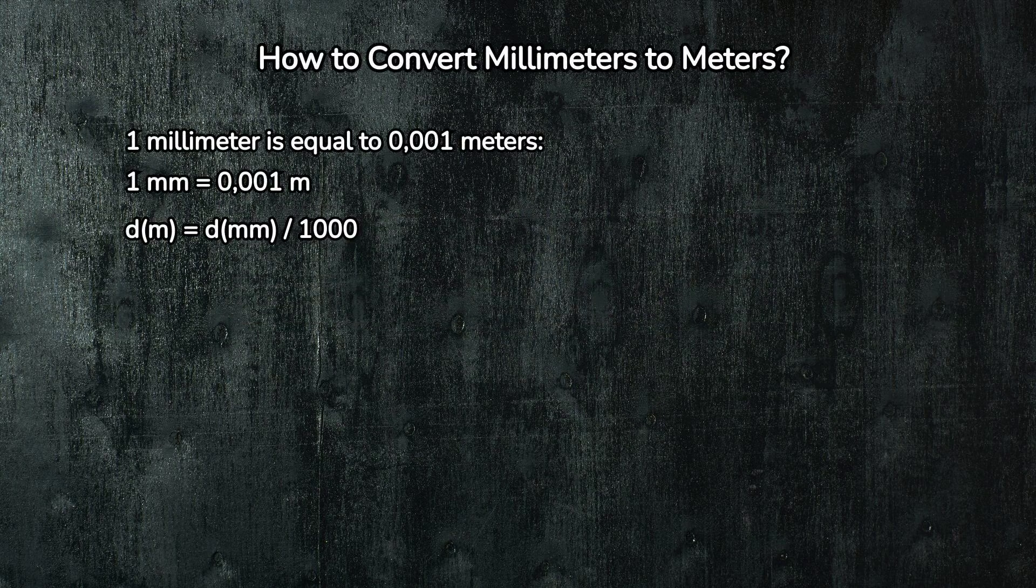First, let's get clear on what we're dealing with. We know that both millimeters and meters are units of length in the metric system, but they're very different in size. A millimeter is one thousandth of a meter. That means there are one thousand millimeters in a single meter. Sounds like a lot, right?